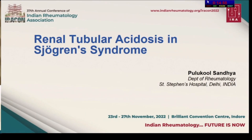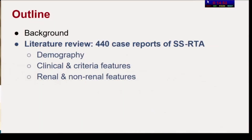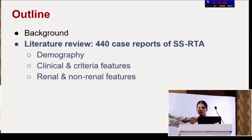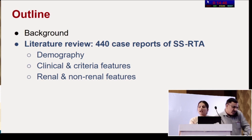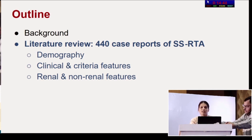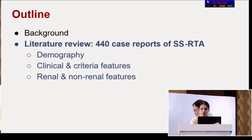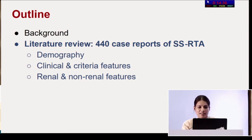Let us get straight into the topic. This would be the outline of my talk: a couple of slides on background of Sjogren's syndrome and renal tubular acidosis, and then a literature review of 440 case reports of Sjogren's syndrome and RTA, focusing on demography, clinical and criteria features, and renal and non-renal features.